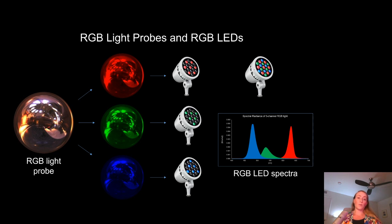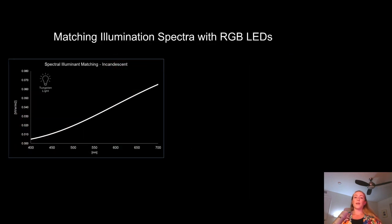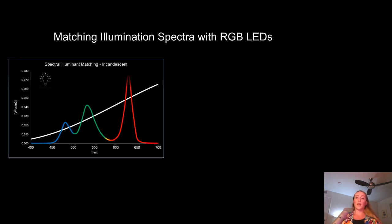RGB LEDs have relatively peaky emission spectra, as we can see for each of the red, green, and blue LEDs for a given pixel. Although this isn't an issue when using these LEDs as a display, we have to think about what happens when we want to use the LED panels as light sources. In 2003, Wenger et al. tried to use RGB LEDs to reproduce the spectrum of real-world illuminants like an incandescent and tungsten source, which has a spectrum that looks something like a broad curve. Unfortunately, you can't match this spectrum exactly using just RGB LEDs because you can't combine these three spectral peaks to match the spectrum of tungsten.